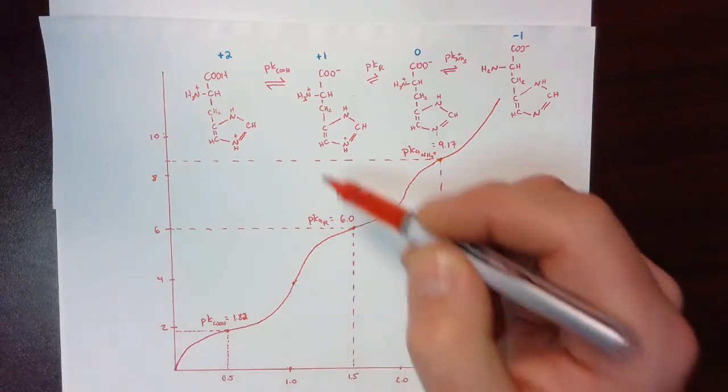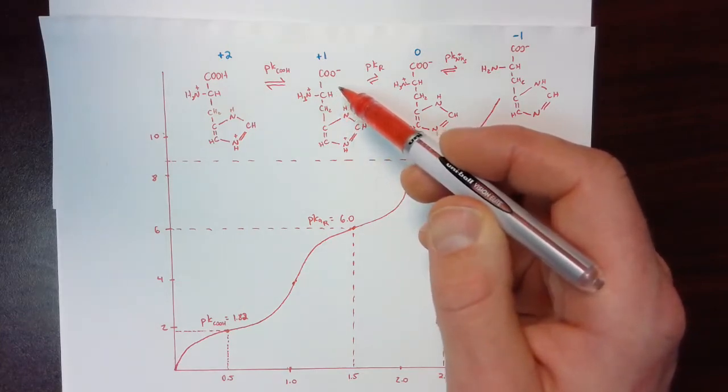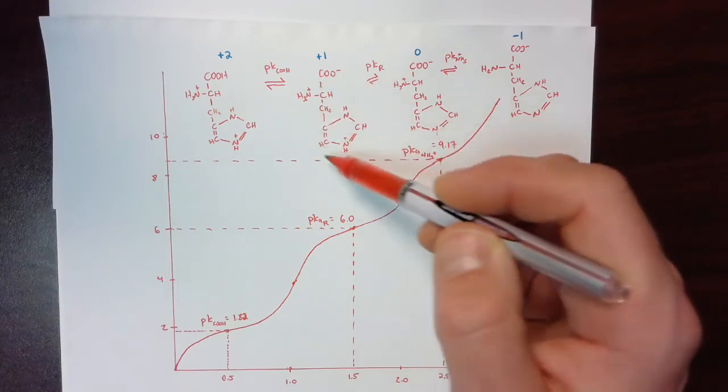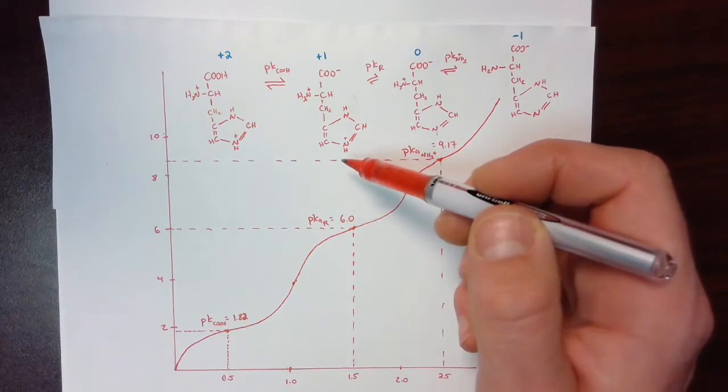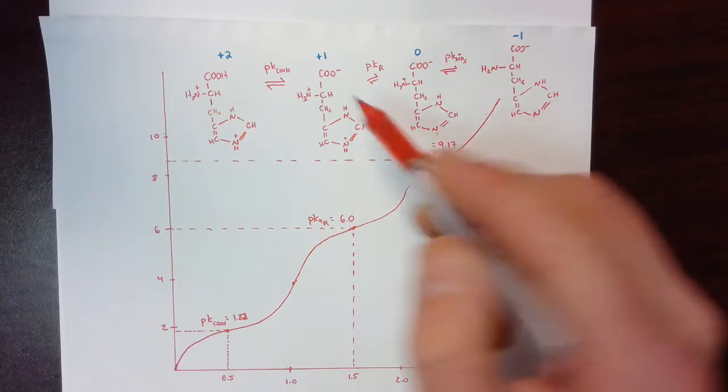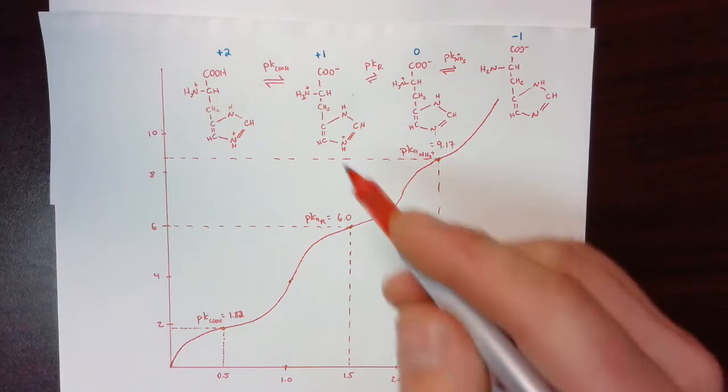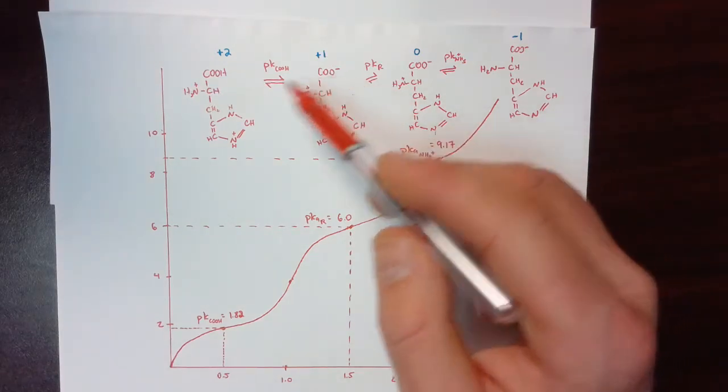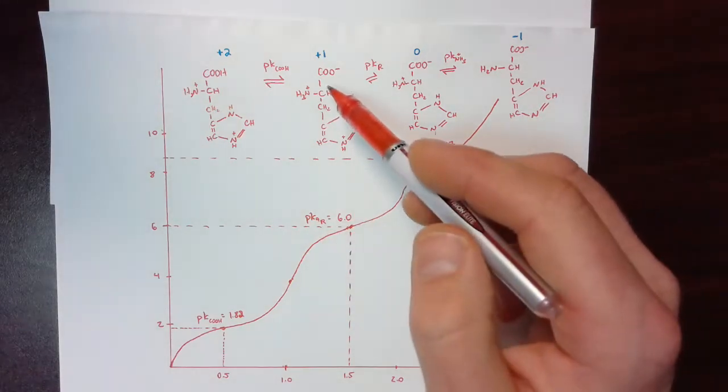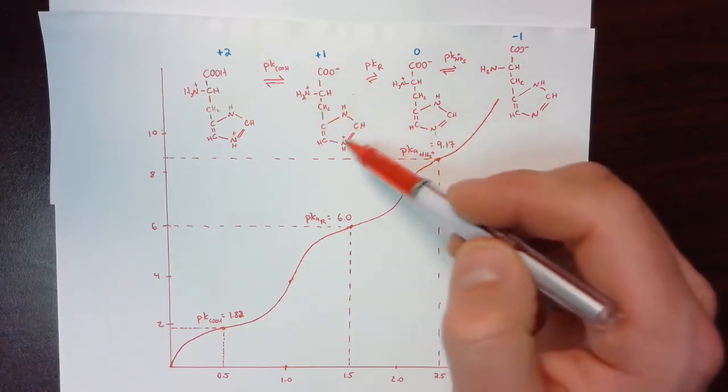So at this point, effectively or in terms of probability, all of the histidine is in this form. And I say all sort of in air quotes because not all of it is in this form. These are all in equilibrium with each other in some form or fashion, or they are at least reversible reactions. And so there's still some in each one of these forms at all pHs, but the vast majority of the amino acid is going to be in this form.